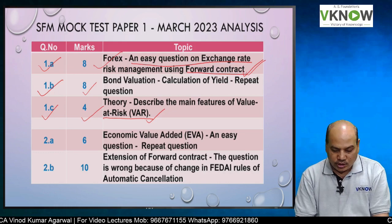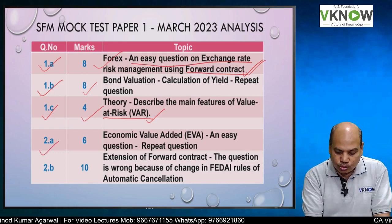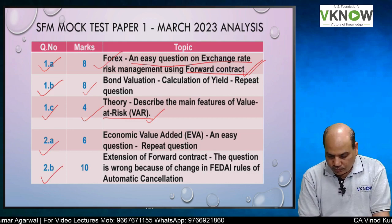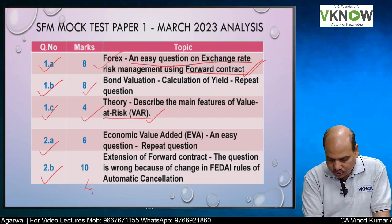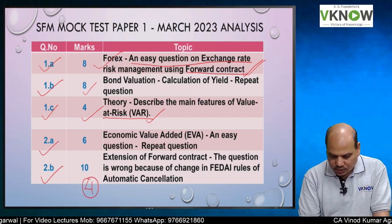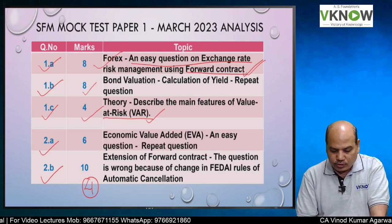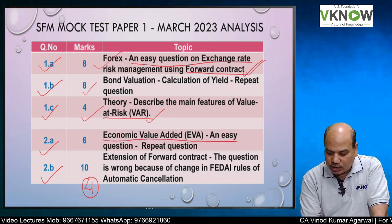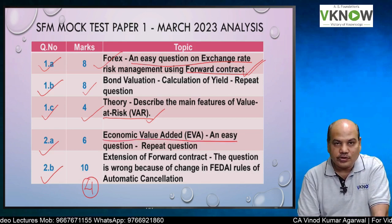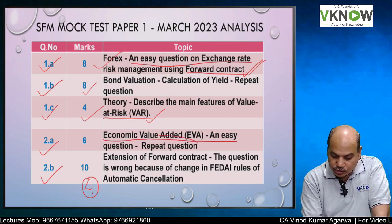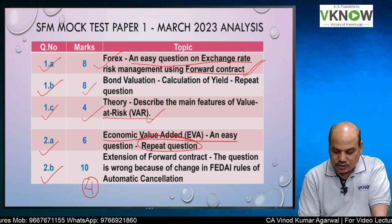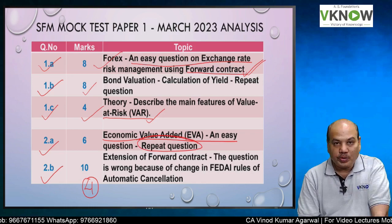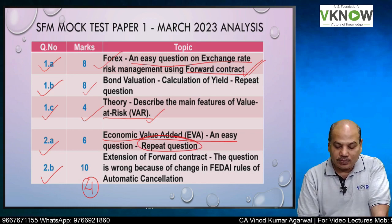Question 2A had two parts, including a theory question. Question 2A was on Economic Value Added — a very easy and repeat question that you must have covered in class. Question 2B was for 10 marks.